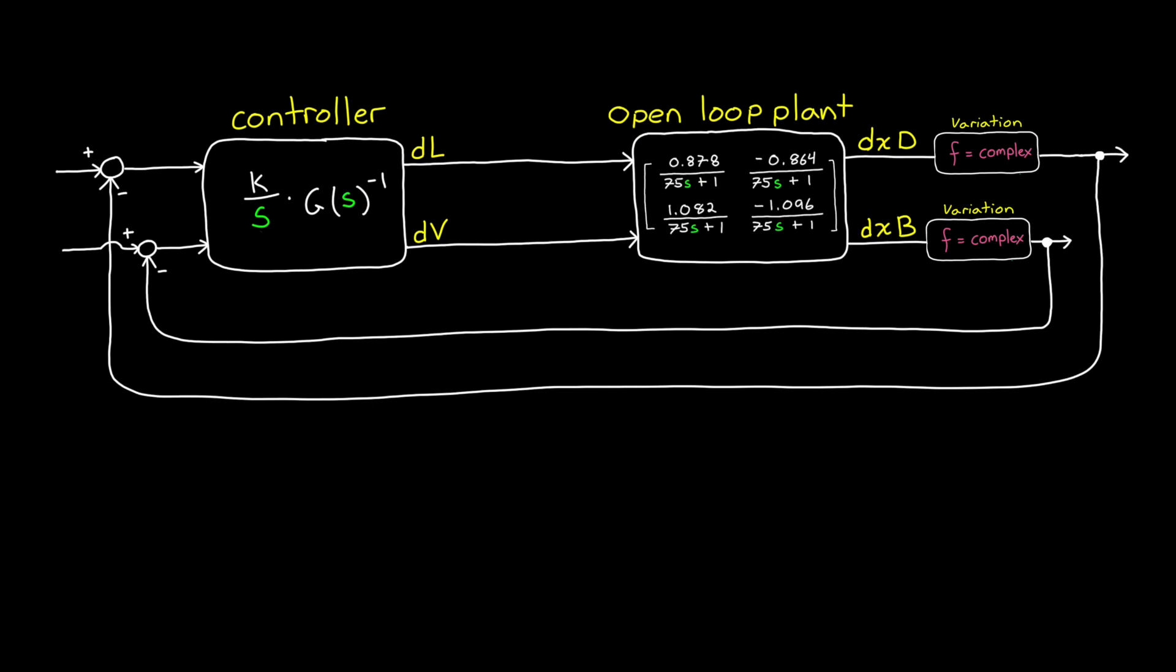And we can take this one final step further and say, well, what if we're uncertain about everything? Well, then we could vary all of the inputs and all of the outputs at the same time. And the disk margin here would tell us how robust we are to simultaneous input and output uncertainty.